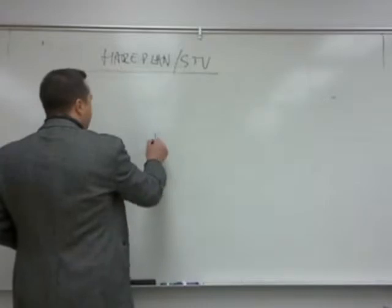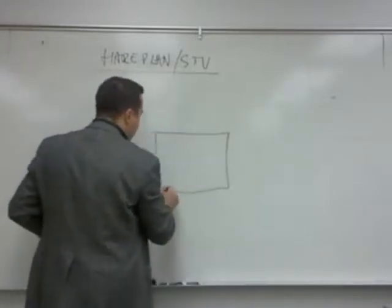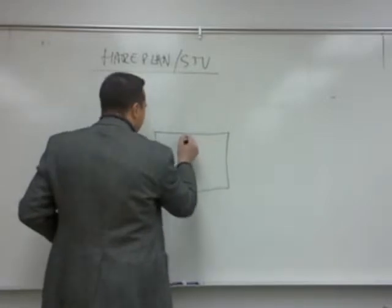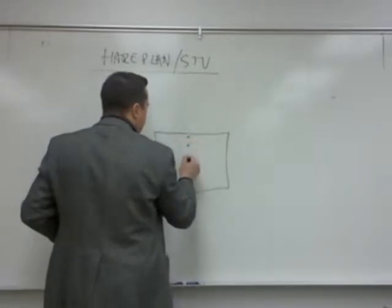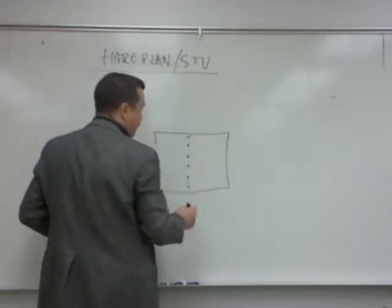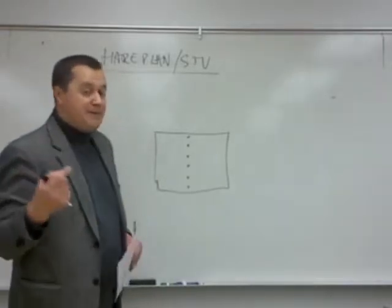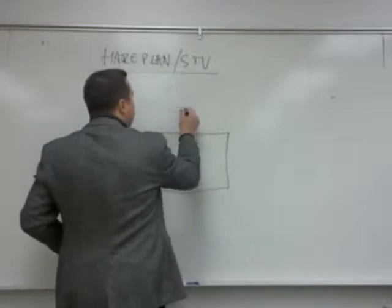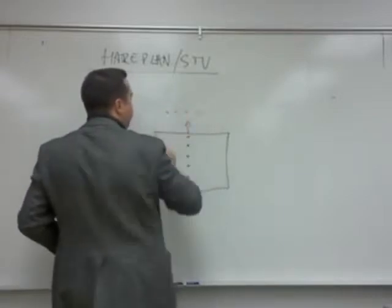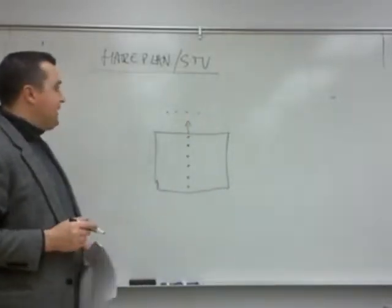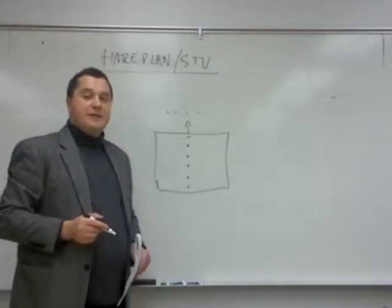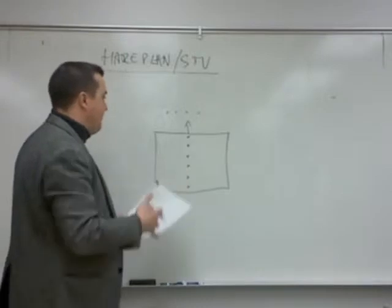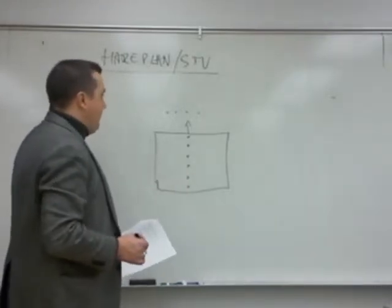How does this work? Well, here's the district and the ballot, and there are several individual candidates — individual candidates. You vote for persons, each representing a different party. But it's not a single member district; we think there are several seats. Let's say there are four seats coming from this competition.